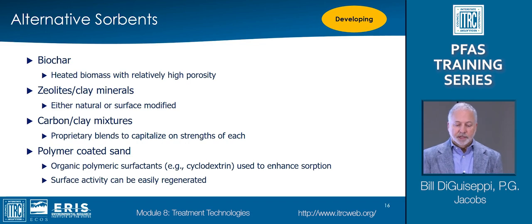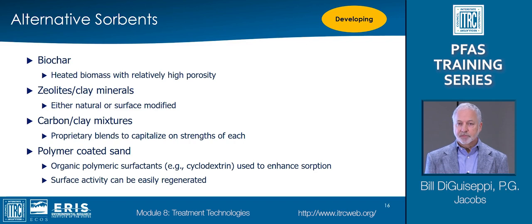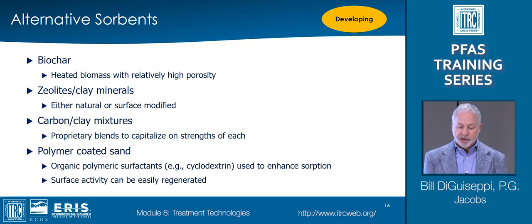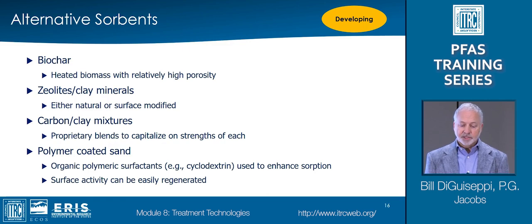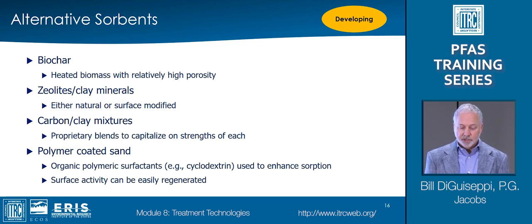The last group of developing technologies are alternative sorbents. Materials that have been tested with some success are biochar, which is essentially a low-grade carbon product that is inexpensive to produce and has shown some PFAS sorption capability. Zeolites are clay minerals where cationic clays attract the anionic functional group of PFAS, and surface modification can be used to enhance that sorption. Mixtures of carbon and clay are proprietary blends that capitalize on carbon sorption and anion attraction to cationic clay materials. And polymer-coated sand, where the coating is the sorptive material, can be regenerated easily by flushing with more of the polymer.